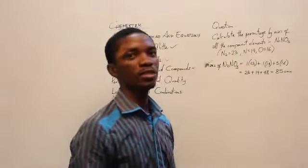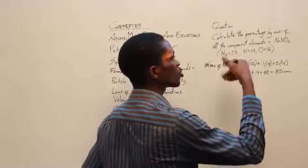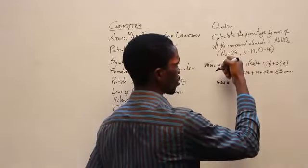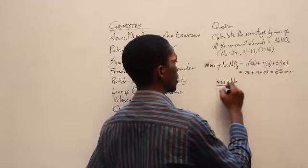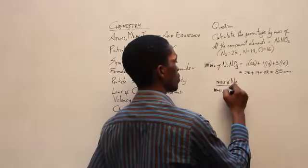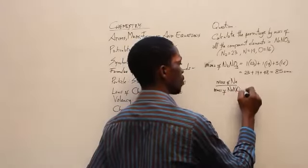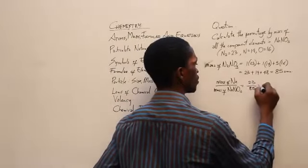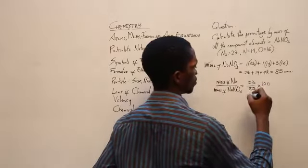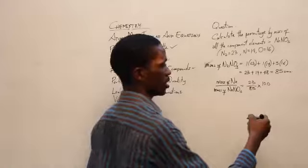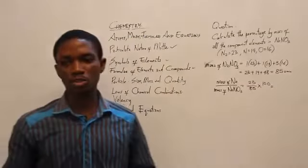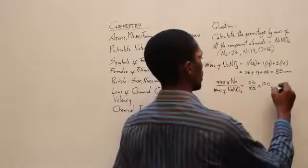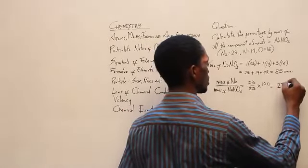We can proceed to calculating the percentage composition of each element. The general formula is: mass of the element divided by the mass of the compound, multiplied by 100. Starting with sodium: mass of sodium divided by mass of NaNO3 multiplied by 100, that's 23 ÷ 85 × 100. When we enter that into our calculator, our answer would be 27%.